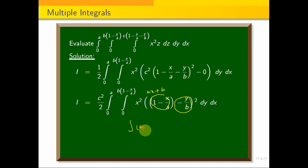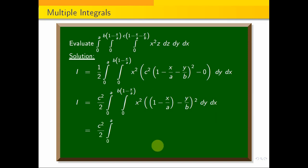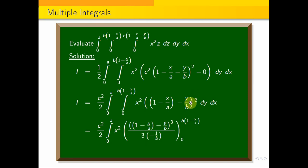We use the formula: integral of (ax + b)^n equals (ax + b)^(n+1) divided by a times (n+1). So applying this formula, we substitute. Here n equals 2, with (minus 1/b) times (1 minus x/a minus y/b). We get c squared by 2, integral 0 to a of x squared, times (1 minus x/a minus y/b)^3 divided by 3 times (minus 1/b), limit 0 to b times (1 minus x/a), dx.